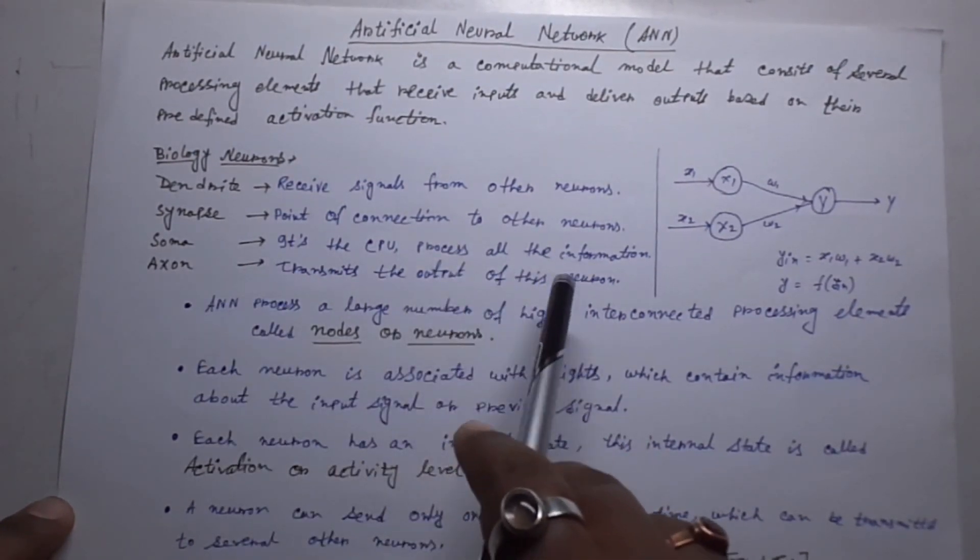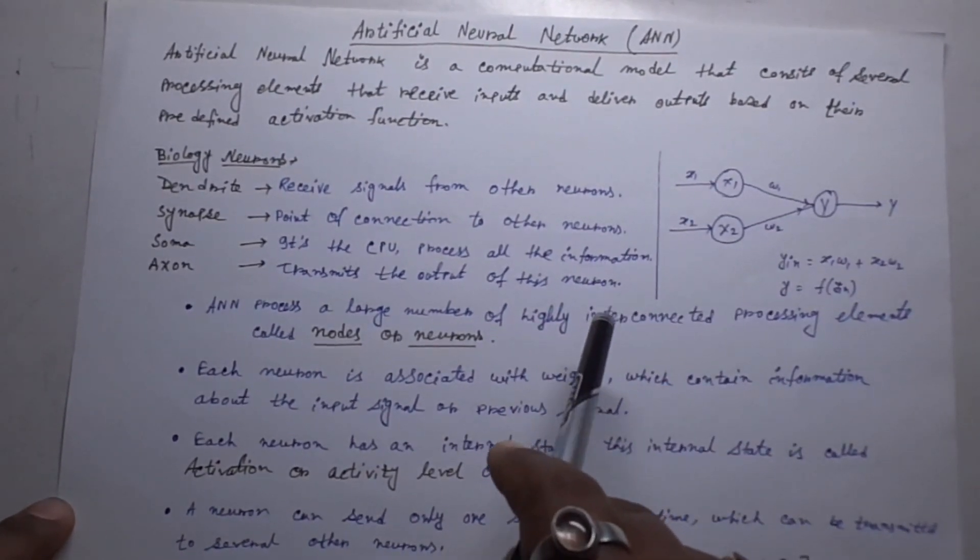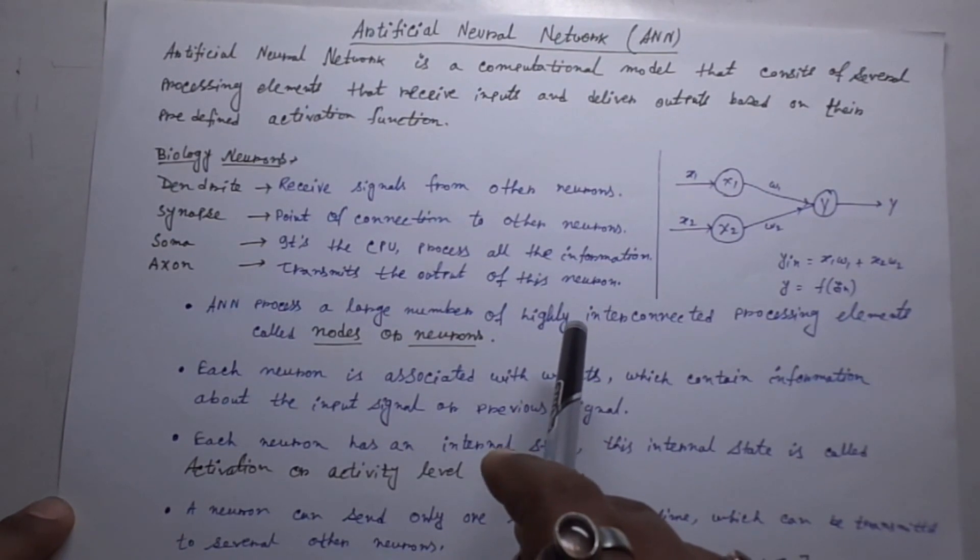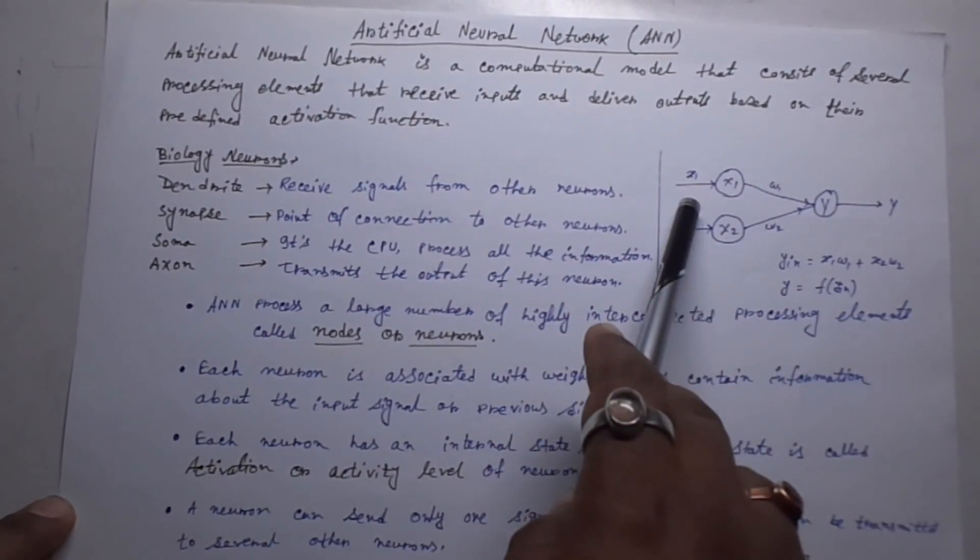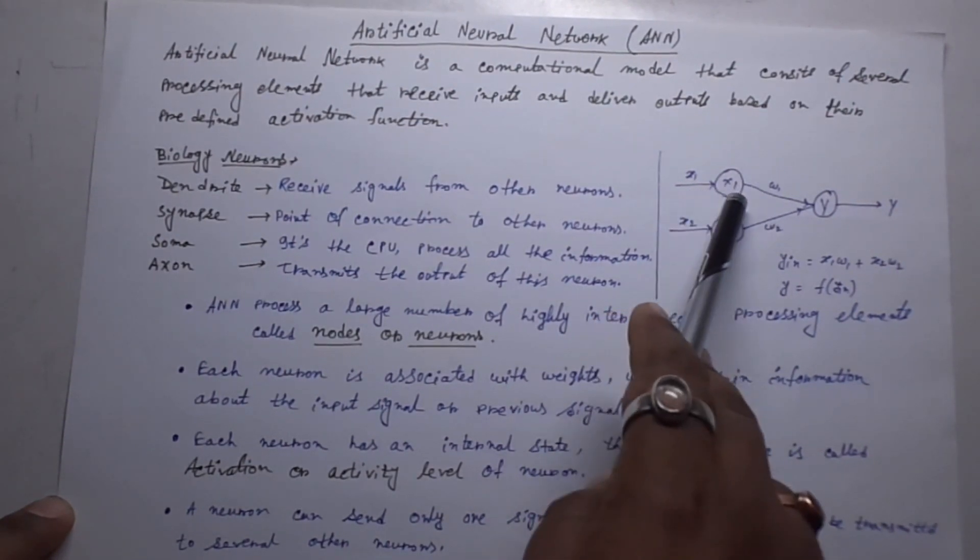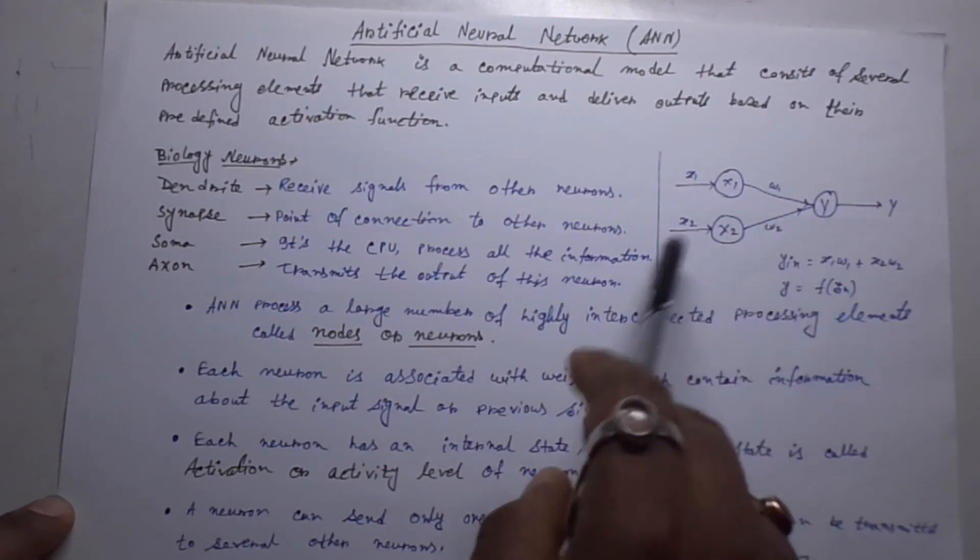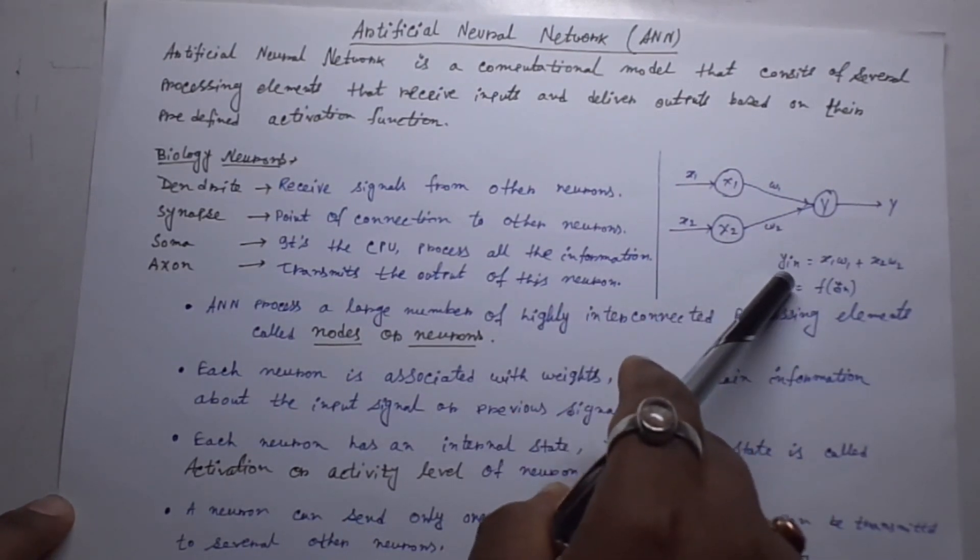So this is what Biological Neuron is and this is what typical artificial neural network looks like. Here we have X1 as inputs and W1 for weights for the first input and X2, W2, Y for output. So how to calculate it?